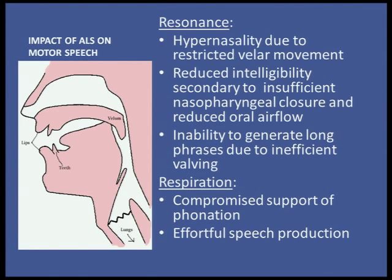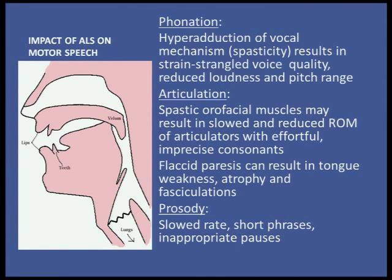Thinking about respiration: patients with compromised breathing have compromised support of phonation, where they're constantly gasping for breath, and this can result in effortful speech production. Looking at phonation, the typical voice quality in ALS patients is that spastic vocal quality — speech pathologists refer to it as that strained, strangled quality, where it sounds really tight, with hyperadduction of the vocal fold mechanism.